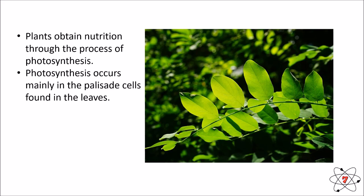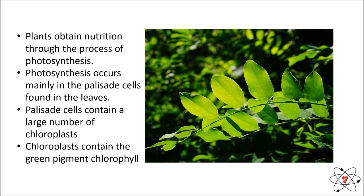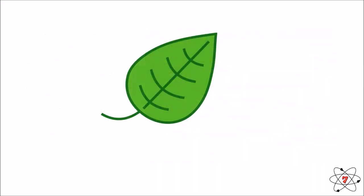Photosynthesis occurs mainly in the palisade cells in the leaves, which are found at the top of the leaf. These cells contain a large number of chloroplasts, and these are the organelles that absorb sunlight, allowing lots of photosynthesis to occur. Chloroplasts also contain the green pigment called chlorophyll — it's this green colouring that allows light to be absorbed into the plant.